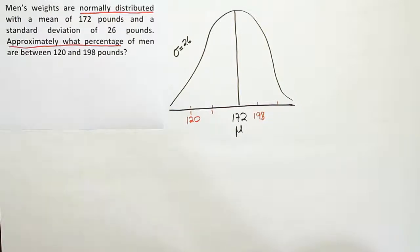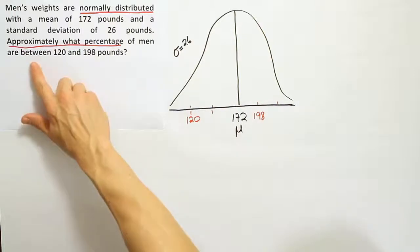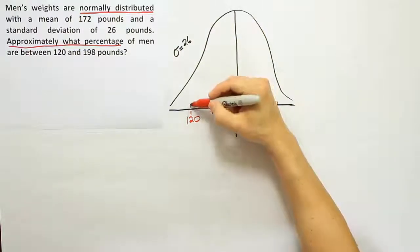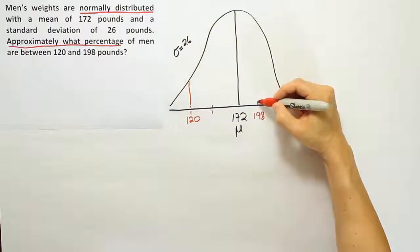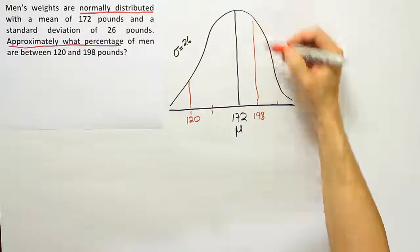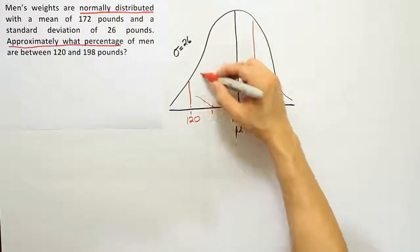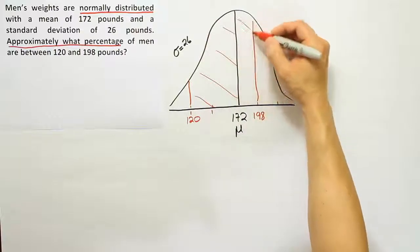Once we have that drawn, I want to say okay, what are they looking for - outside of the interval or between the interval? They tell us between, so I know that I'm actually looking for the area that's going to occur between these two lines. That's what I want to know - what's the total area between these two lines.